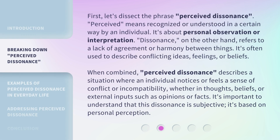First, let's dissect the phrase 'perceived dissonance.' Perceived means recognized or understood in a certain way by an individual — it's about personal observation or interpretation. Dissonance, on the other hand, refers to a lack of agreement or harmony between things. It's often used to describe conflicting ideas, feelings, or beliefs.